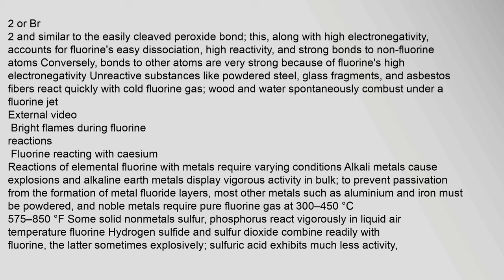Fluorine's high electronegativity accounts for its easy dissociation, high reactivity, and strong bonds to non-fluorine atoms. Conversely, bonds to other atoms are very strong. Unreactive substances like powdered steel, glass fragments, and asbestos fibers react quickly with cold fluorine gas. Wood and water spontaneously combust under a fluorine jet. Reactions of elemental fluorine with metals require varying conditions: alkali metals cause explosions, and alkaline earth metals display vigorous activity. Most other metals such as aluminium and iron must be powdered, and noble metals require pure fluorine gas at 300 to 450°C.